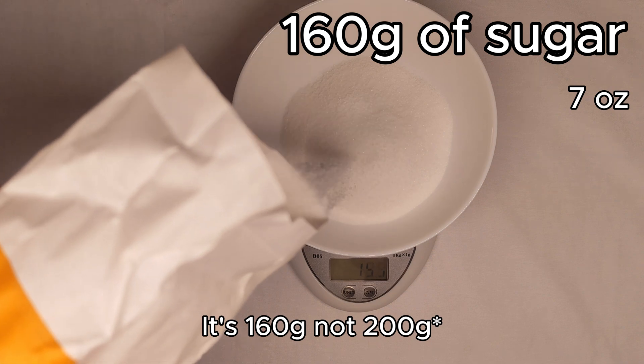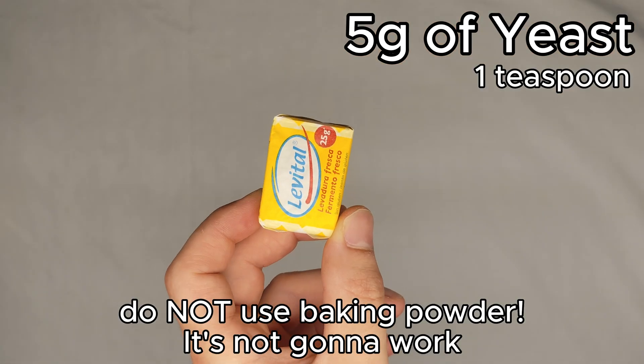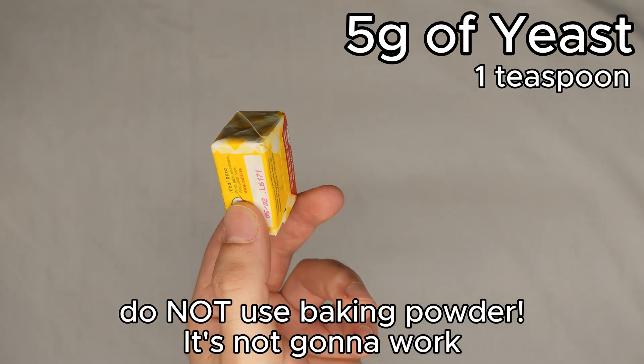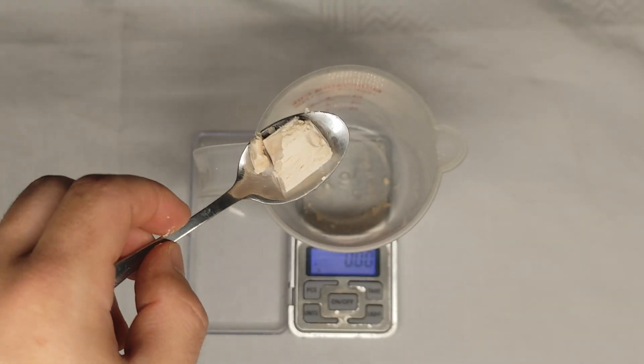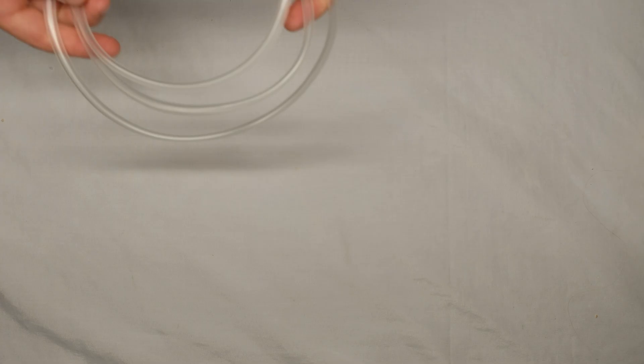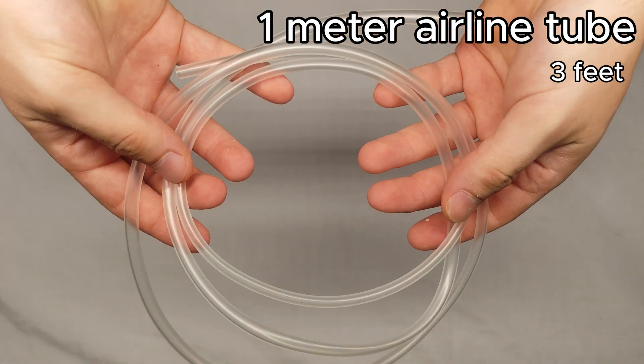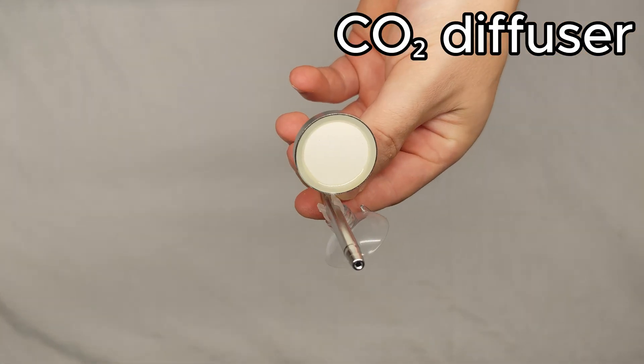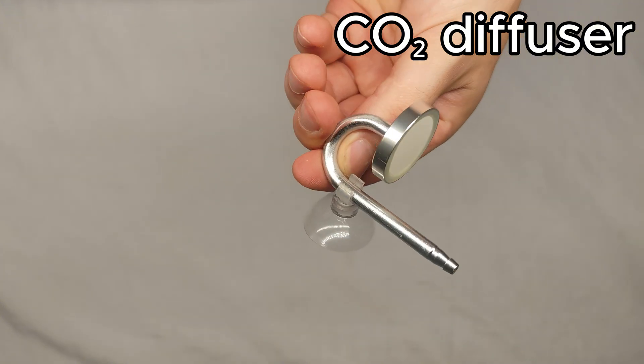200 grams of sugar. Baker's yeast, either dry or fresh. I use fresh, but dry yeast works just as well. Just one teaspoon is enough. At least one meter of airline tubing.